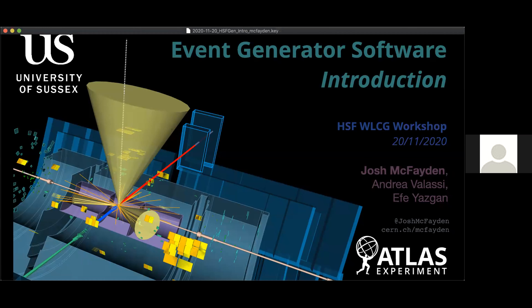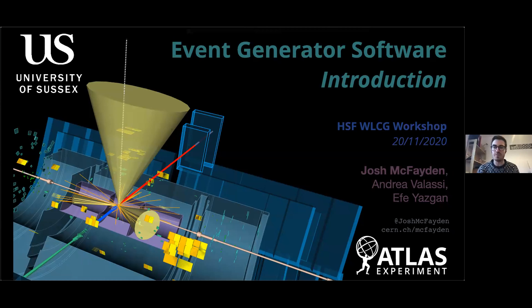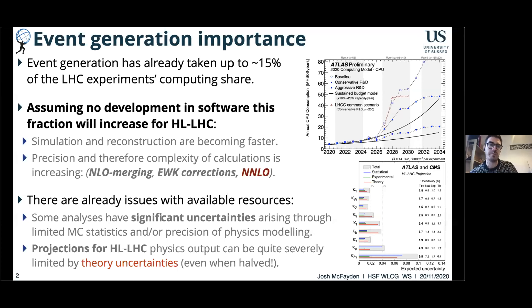Welcome everybody. I wanted to give a brief overview, for people not familiar with the HSF generators working group, of what we're about and why this work is important. To put event generation into perspective in the wider context of computing and software at the LHC experiments: event generation has already taken up, in certain experiments for certain years of producing simulated samples, something like 15% of the entire experiments' computing share. This is obviously not negligible, and assuming no software development, this fraction will increase quite a bit for High-Luminosity LHC.